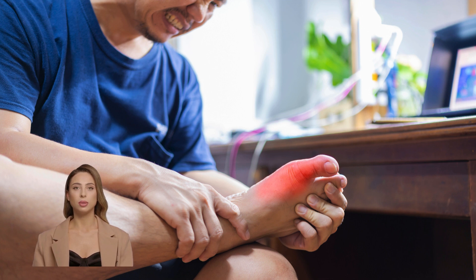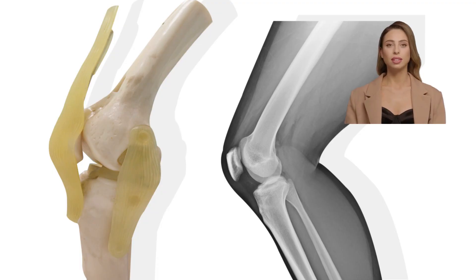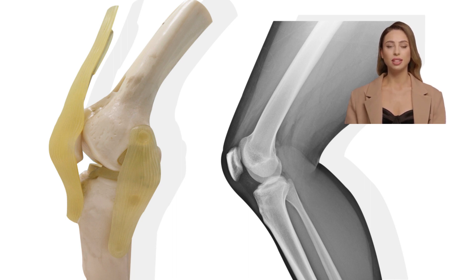Rheumatoid arthritis has four stages of development. Stage one is the early stage — you will feel joint pain, stiffness, and swelling. The joint tissue or lining, called the synovium, is inflamed. Stage two is the moderate stage, where the synovium increases and inflammation causes damage to the joint cartilage. At this stage you may experience pain and a limited range of motion.